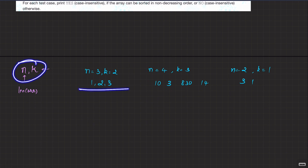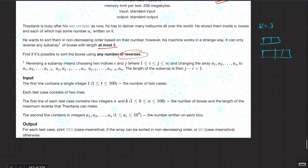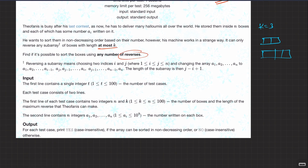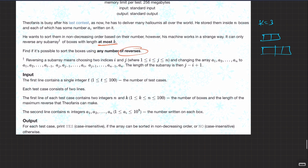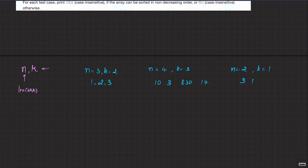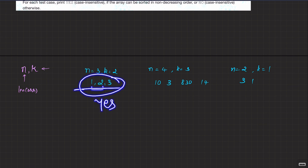Our input has n, k, and the array itself. n is the length of the array and k is basically the maximum size of the sub-array that you can reverse at a time. The important thing to note is we can make any number of reverses — that's an important factor here. First test case: array size is 3 and k is 2. The array is already sorted, so the answer will be yes.